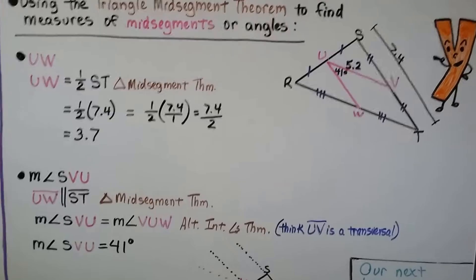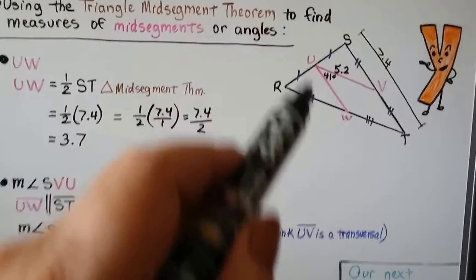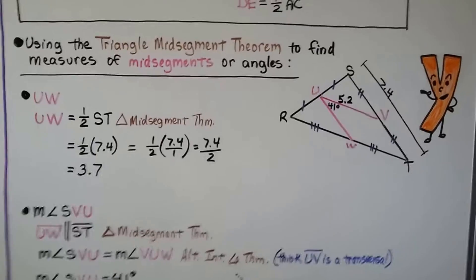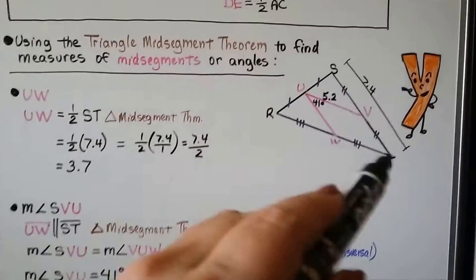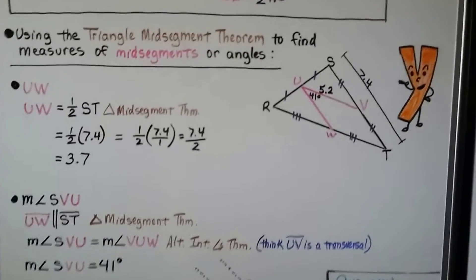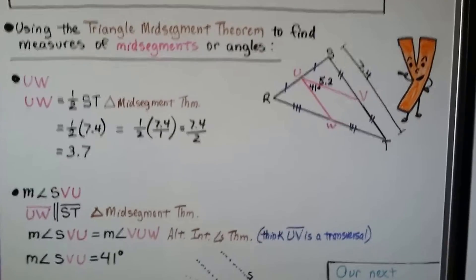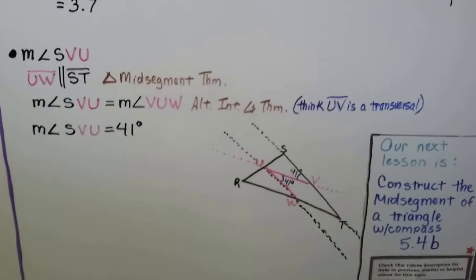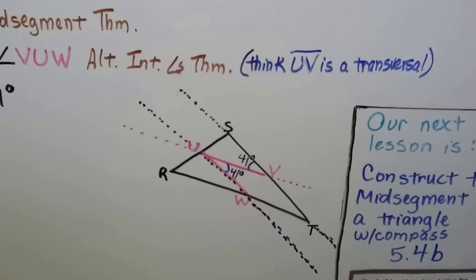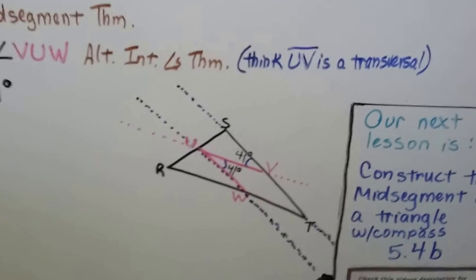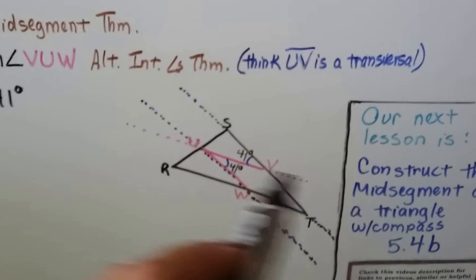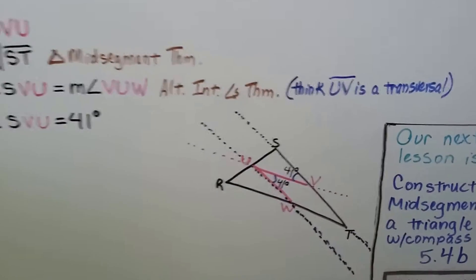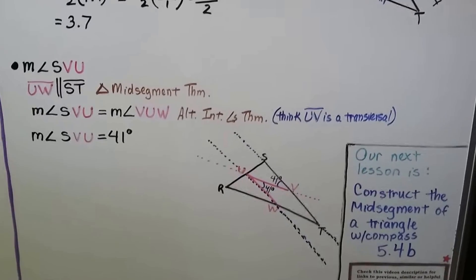For the measure of angle SVU: UW is parallel to ST by the Triangle Mid-Segment Theorem. The measure of angle SVU equals the measure of angle VUW, which is 41 degrees — that's the Alternate Interior Angles Theorem. If you think of segment UV as a transversal with ST parallel to UW, angles SVU and VUW are alternate interior angles. Since angle VUW is 41 degrees, angle SVU is also 41 degrees.